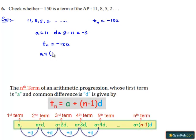TN in arithmetic progression is equal to A plus N minus 1 into D that is equal to minus 150. Which implies A value here is 11 plus N minus 1 into D here is minus 3 that is equal to minus 150.